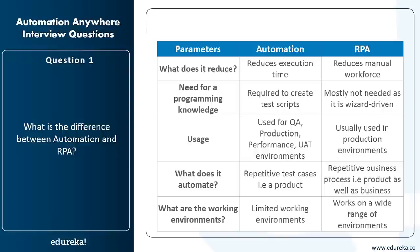Continuing the comparison: automation automates repetitive test cases for a product, while RPA automates repetitive business processes covering products as well as business. For automation there are limited working environments, whereas for RPA there is a wide range of environments. In summary, automation reduces execution time, requires programming knowledge, is used for quality analysis and test environments, and works in limited environments. RPA reduces manual workforce, is wizard-driven, mostly used in production environments, automates business processes, and works across a wide range of environments.